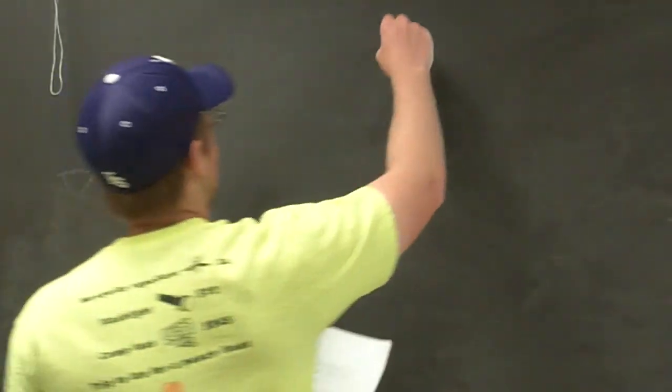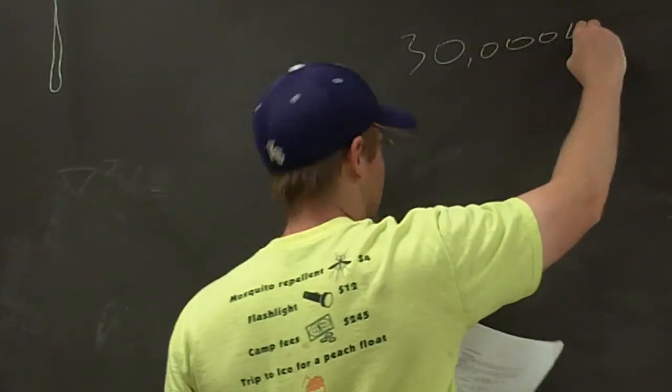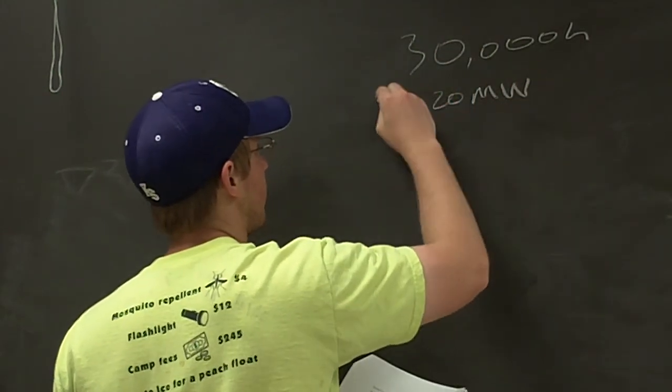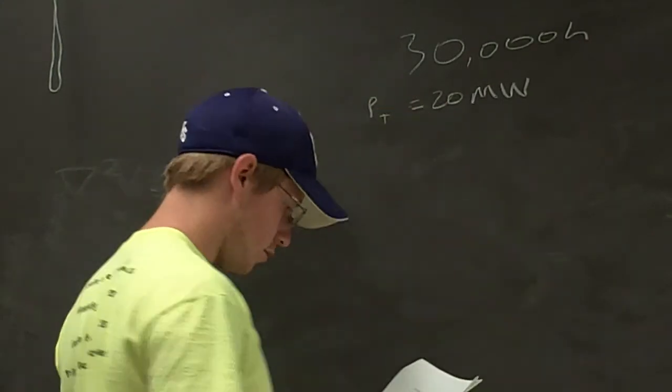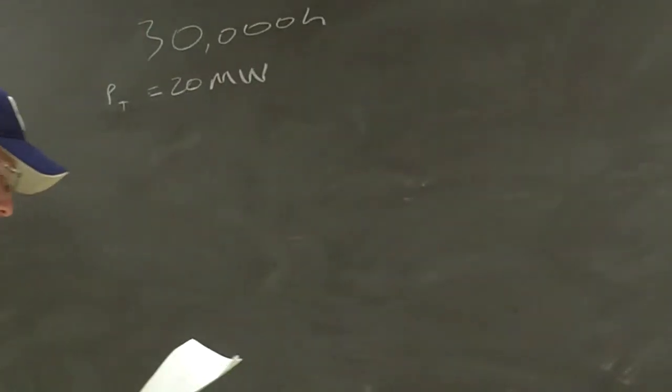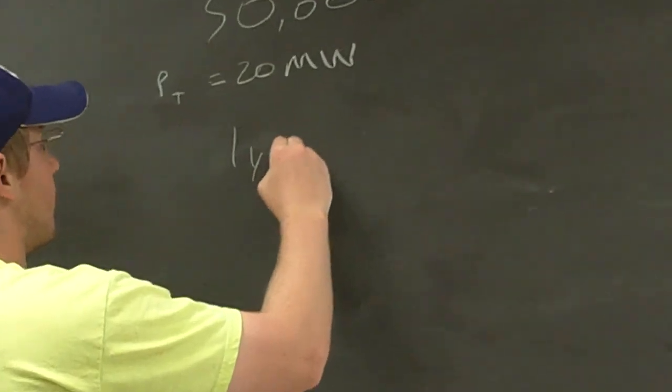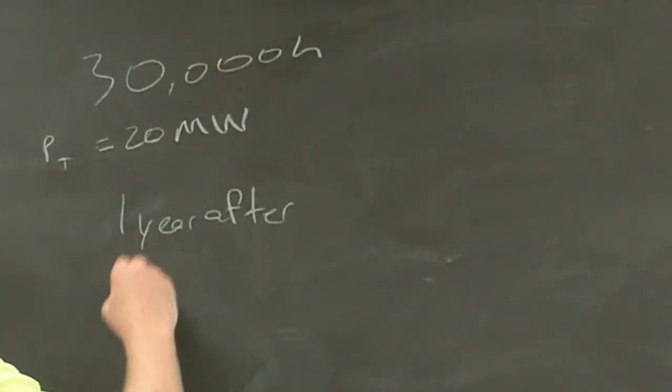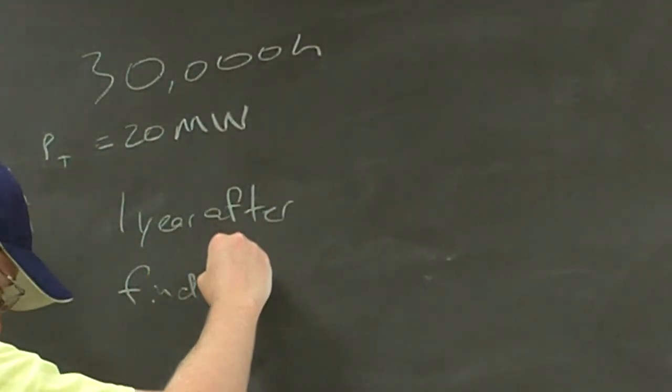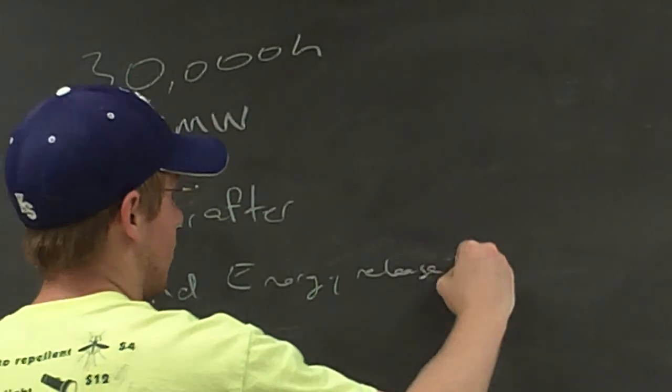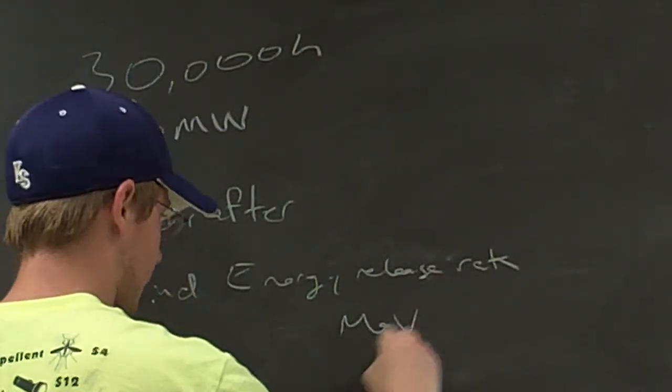Problem 4.13: Suppose that a single fuel assembly in a nuclear power plant operates for 30,000 hours at a thermal power of 20 megawatts. It's removed and placed in storage after one year. One year after, estimate at the time of shipment the energy release rate in MeV per second.